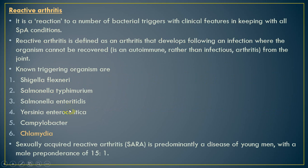The third disease in this group is reactive arthritis. Reactive means the arthritis occurs as a reaction to something — specifically an infection or bacterial trigger — with clinical features consistent with spondyloarthritis, including dactylitis, enthesitis, and inflammatory pain. It is defined as arthritis that develops following a GIT or genitourinary infection, where the organism cannot be recovered from the inflamed joint.